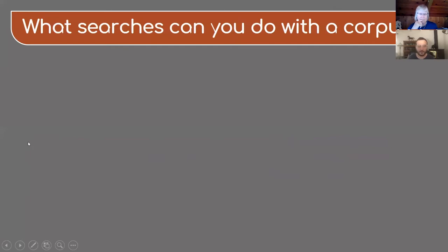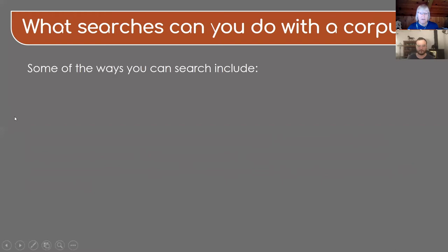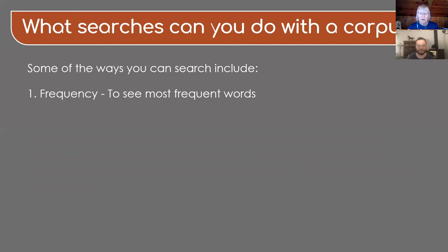All right, thank you. So related to that — looking at different linguistic features — what searches can you do with a corpus? Yeah, that's a really good question. There are so many different types of searches that we can do. As I mentioned with the online corpora, these types of searches are available both through most online interfaces and also through the corpora that you can use on your computer with different tools. Some of the ways you can search include frequency — you could see the most frequent words in your corpus.